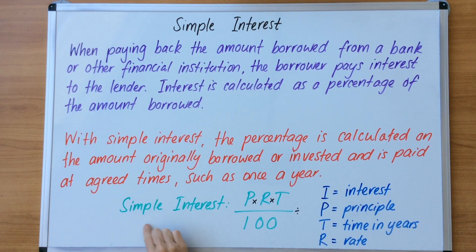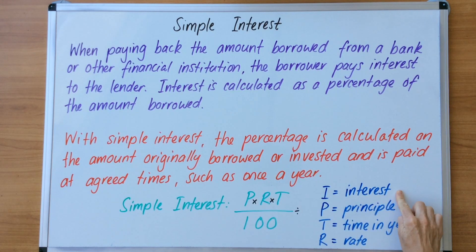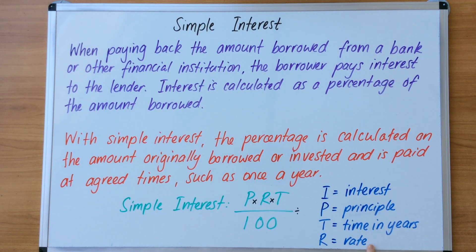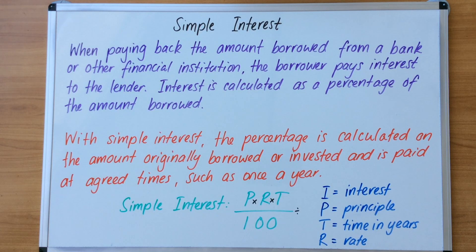For simple interest, this is the basic rule. I is for interest, P is for principal — the amount originally invested or borrowed. T is for time in years, and R is the rate, which is the percentage — either given to you if you're investing, or charged to you if you're borrowing from a bank or financial institution.